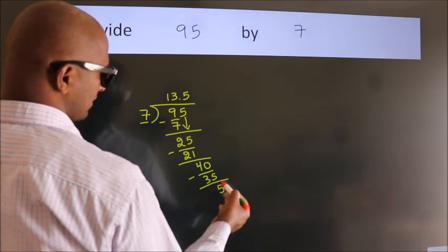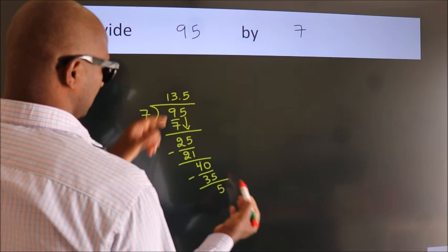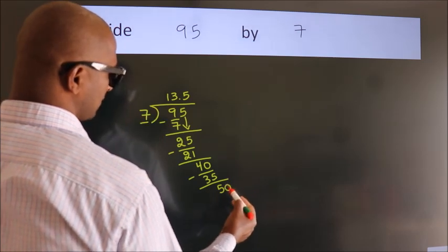After this, we already have the decimal. So, directly take 0. So, 50.